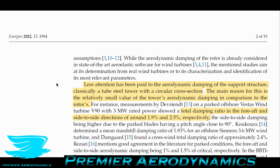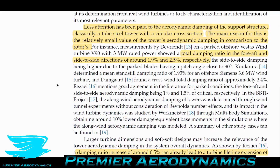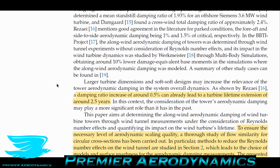For a 3 megawatt wind turbine, total damping ratios for fore-aft and side-to-side vibrations are 1.9% and 2.5% respectively. But how can we make this better? They say that if you can increase these damping ratios by even half a percent, that can increase the turbine's lifetime by about 2.5 years — roughly a 10% increase in lifetime. That's a huge amount.